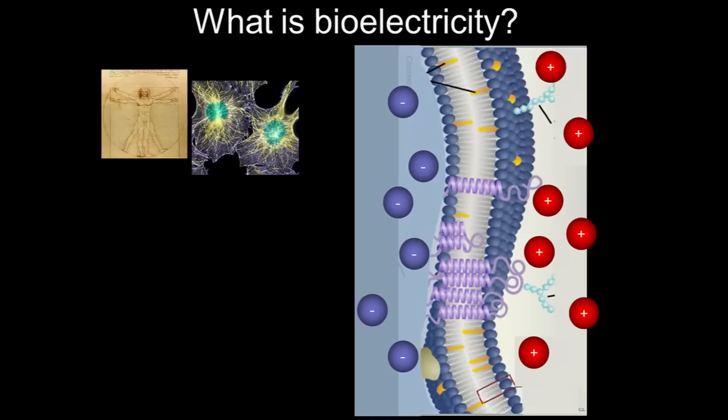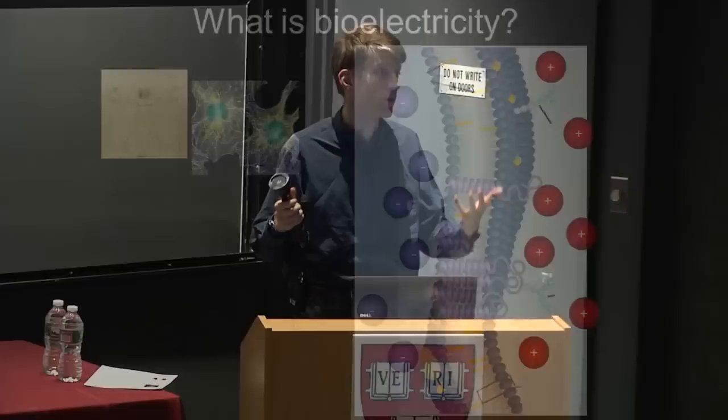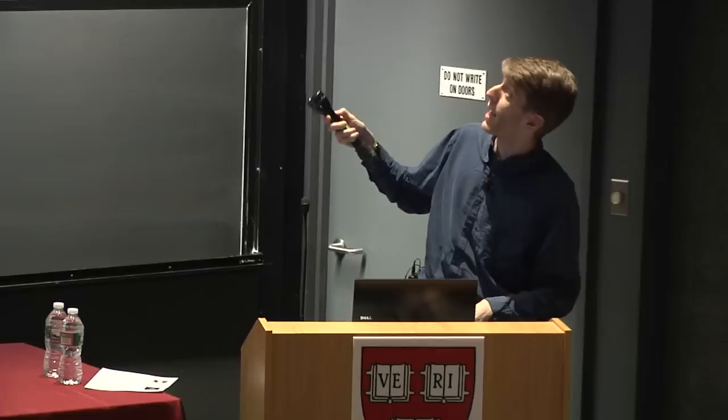Lipid bilayers like this are all over biology — not just around the outsides of cells, but also compartmentalizing little organelles within cells. Anywhere there's one of these layers, you might expect there to be interesting electrical phenomena. If you open a pore in the layer, you can let ions through and change this voltage. This is a way to have something that happens on one side of the layer propagate information to the opposite side of the cell, because electrical signals can travel along these lipid bilayers.